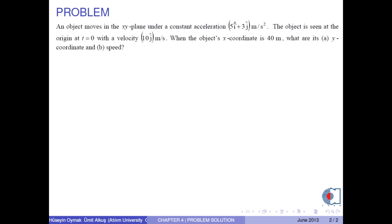An object moves in the xy-plane under a constant acceleration 5i-hat plus 3j-hat meters per second squared. The object is seen at the origin at t equals 0 with a velocity 10j-hat meters per second. When the object's x-coordinate is 40 meters, what are its y-coordinate and speed?